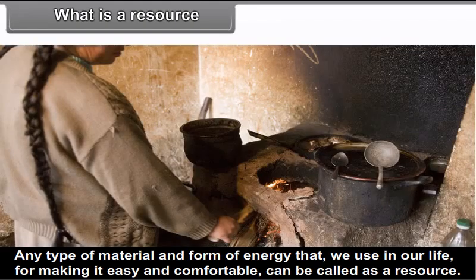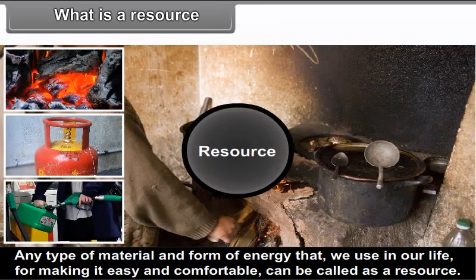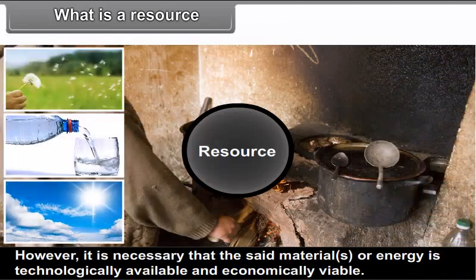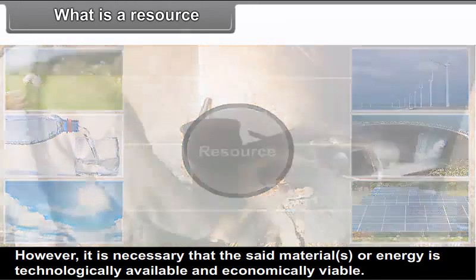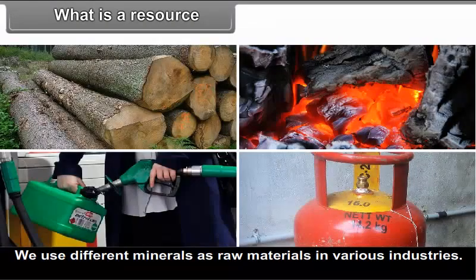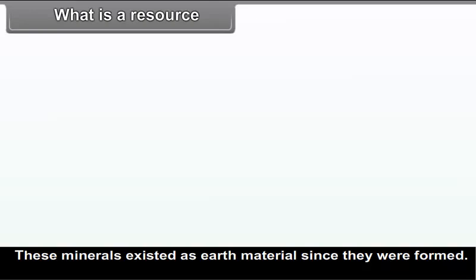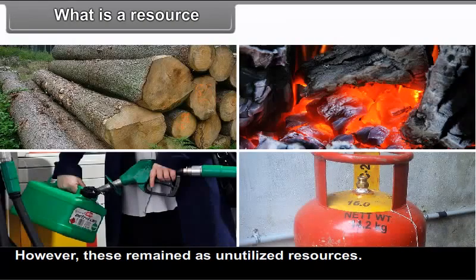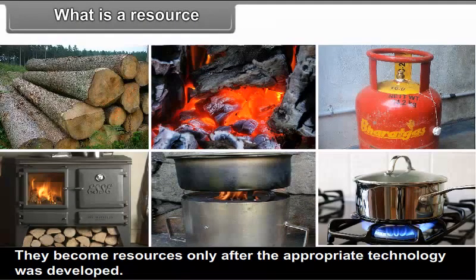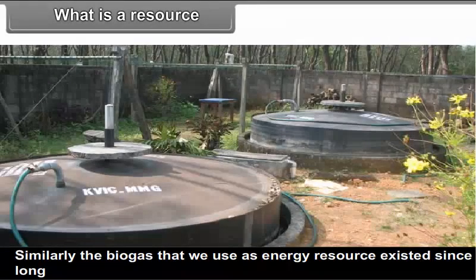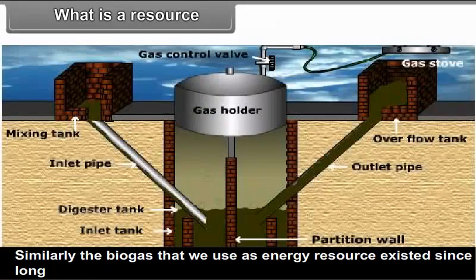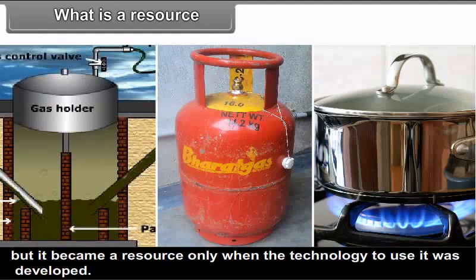What is a resource? Any type of material and form of energy that we use in our life for making it easy and comfortable can be called a resource. However, it is necessary that the said materials or energy are technologically available and economically viable. We use different minerals as raw materials in various industries. These minerals existed as earth materials since they were formed, but they remained as unutilized resources. They became resources only after the appropriate technology was developed.